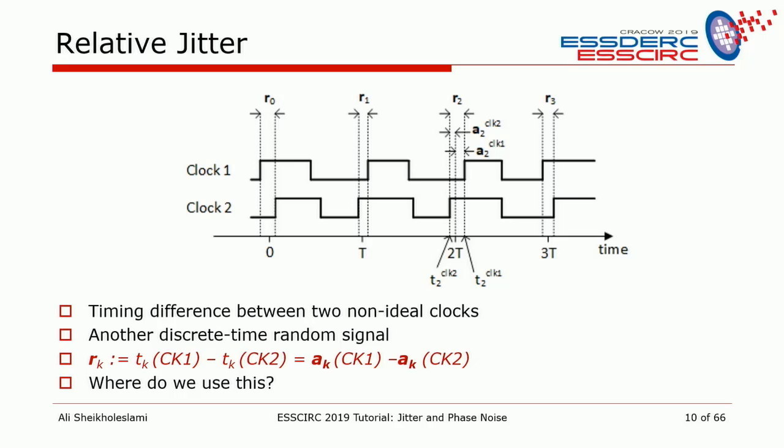Relative jitter is important because in wireline, at the front end you're sampling data with a clock, or in a PLL you have a reference clock and a VCO clock — whenever two non-ideal clocks meet. What matters is not the absolute time but whether the data and clock move relative to each other; relative jitter can cause error, not absolute jitter in that case. We'll have more to talk about this in the next presentation by Nicola Dadal.